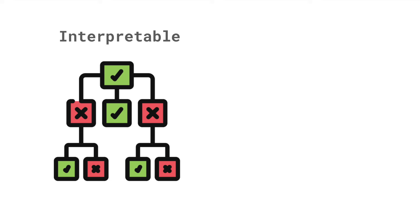When you first dive into the field of interpretable machine learning, you'll notice some very similar terms flying around. We're going to discuss one definition and hopefully clarify some things — that is the difference between an interpretable model and an explainable model.